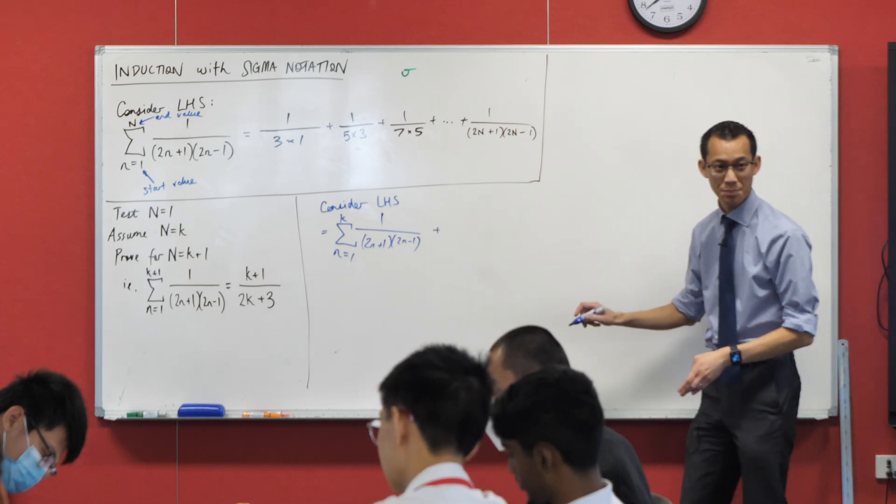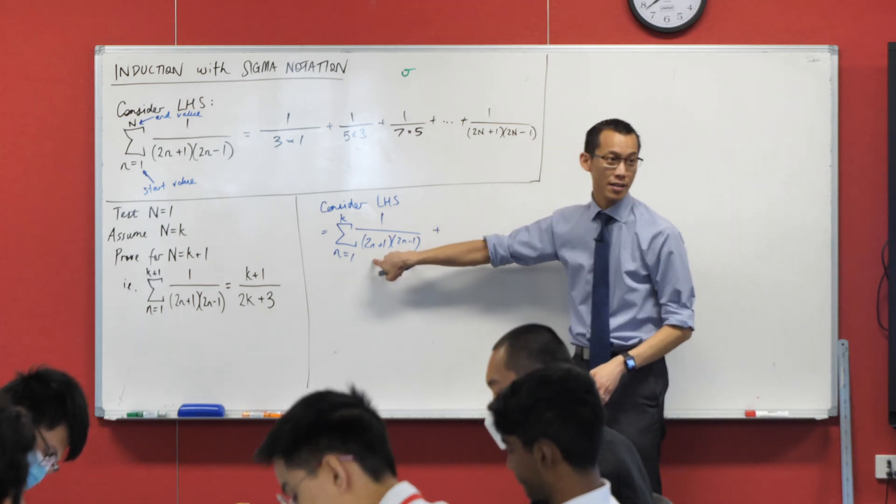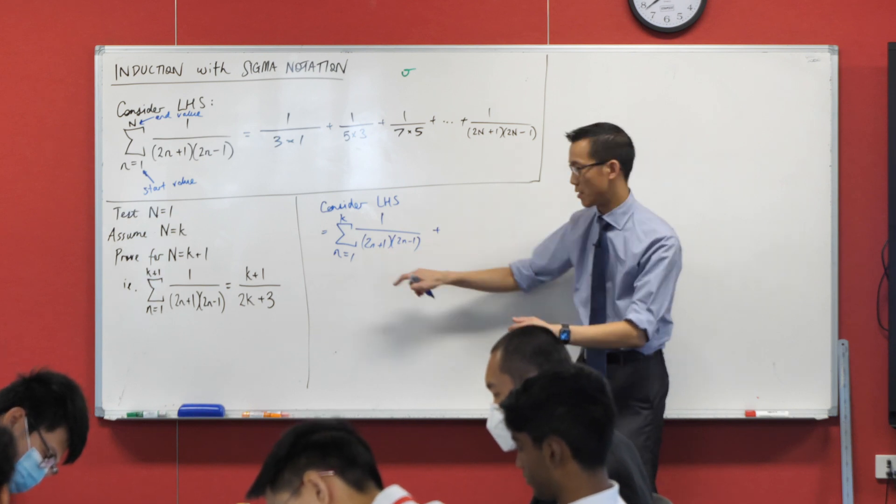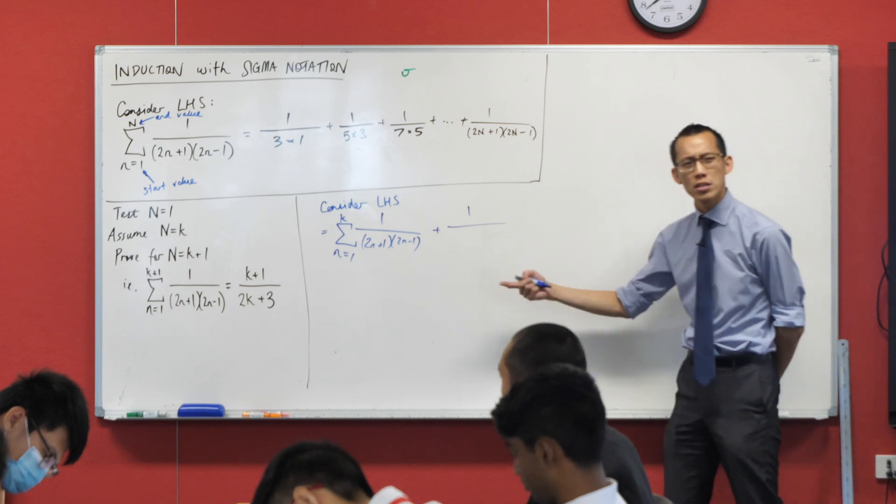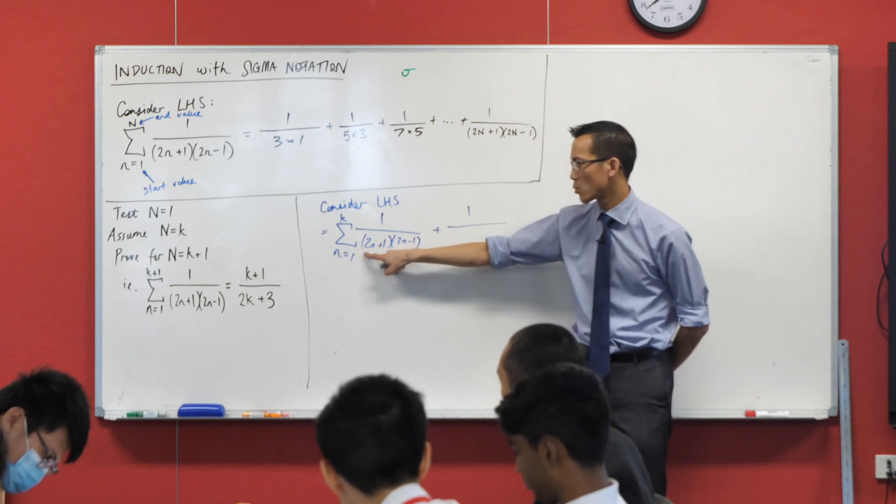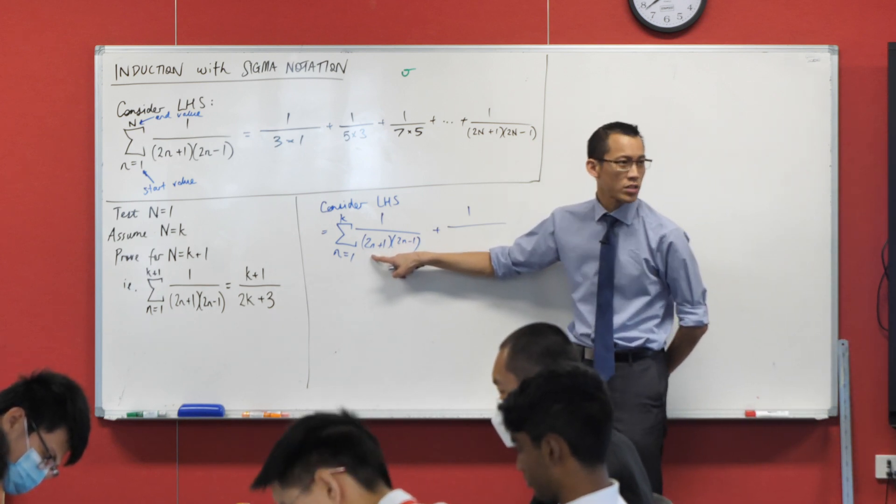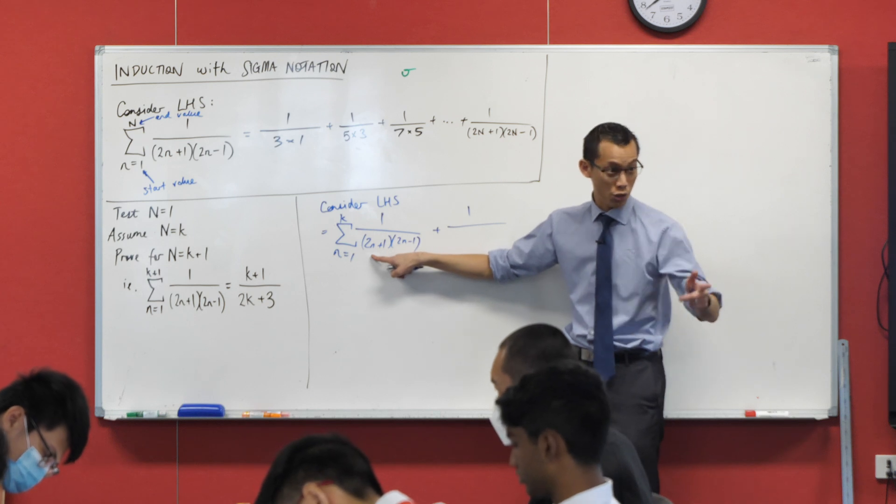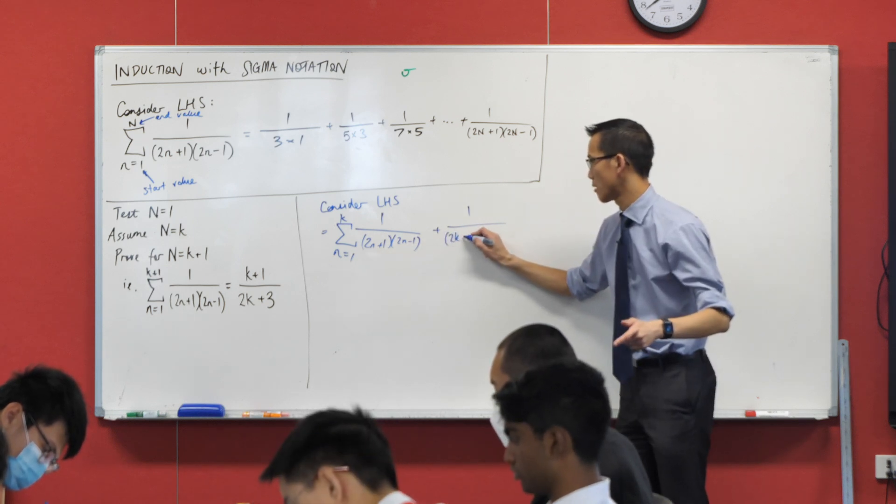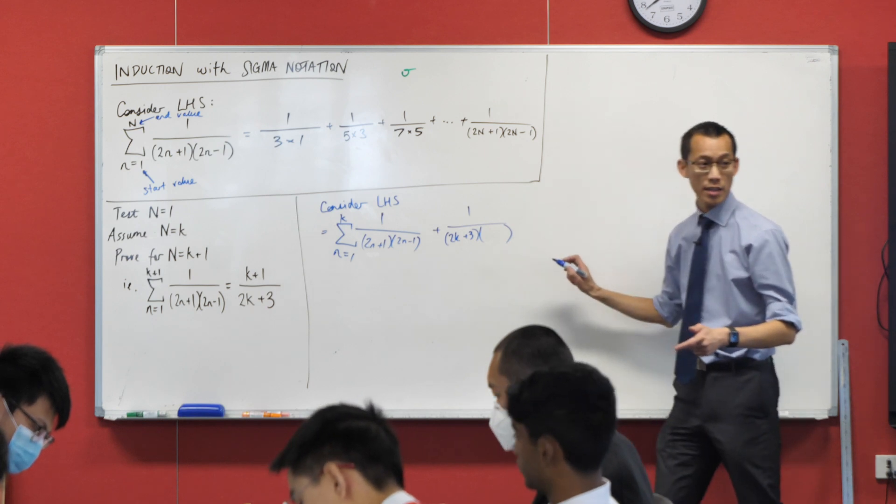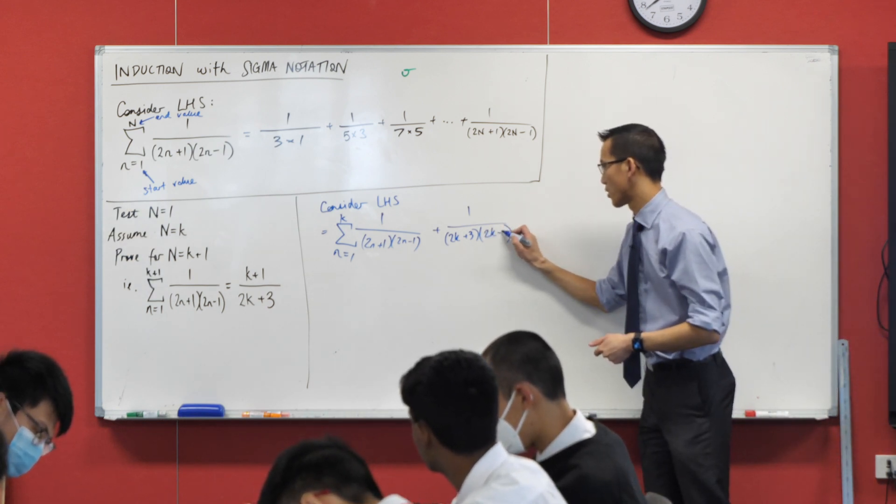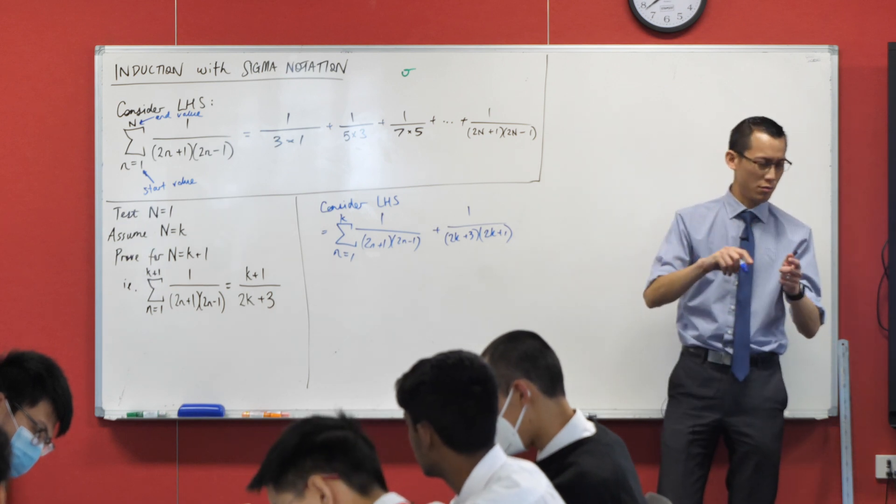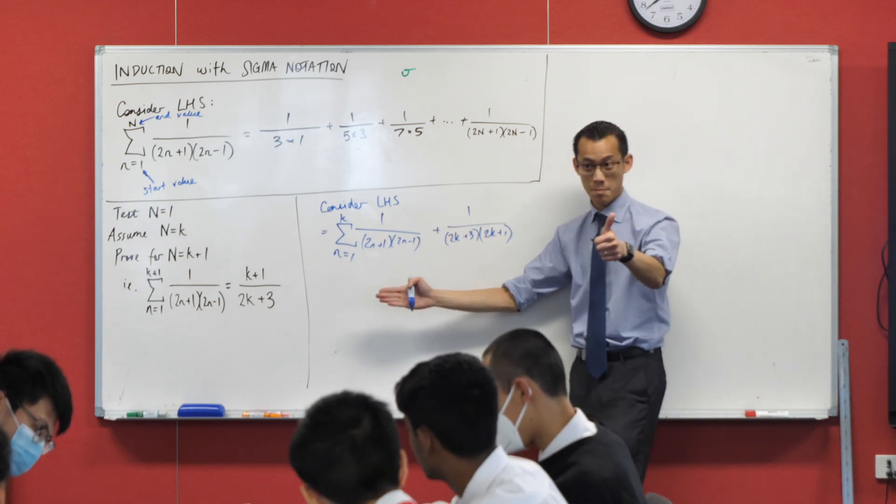I'm going to have to say plus whatever this looks like when I substitute in k plus one. So easy part is the numerator, nothing much going on there. What's the denominator going to look like? When I put k plus one in this first set of brackets, what's it simplified to? 2k plus three, fantastic. So chuck that in brackets here, and then what about the second set of brackets? 2k plus one, because it's 2k plus two minus one. With me?